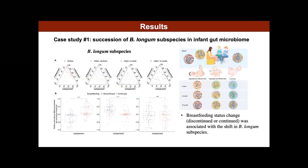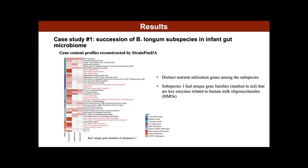In case study number one, we applied StringPanda to an infant gut microbiome dataset. We discovered a clear pattern of a shift in the dominant B. longum subspecies over time, which was associated with breastfeeding status change. We further looked at the gene content profiles of the subspecies and found distinct nutrient utilization genes among them. Specifically, subspecies one has unique gene families that are key enzymes related to human milk oligosaccharides.